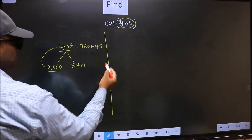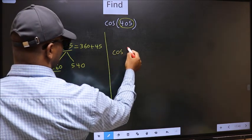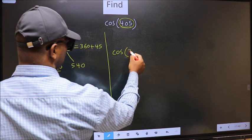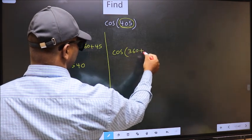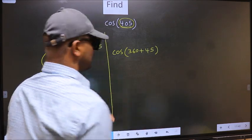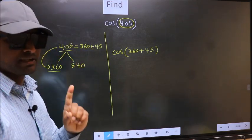So, this will become cos. In place of this, now we write this: 360 plus 45. This is your step 1.